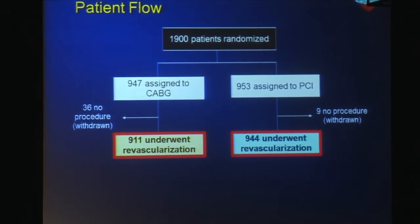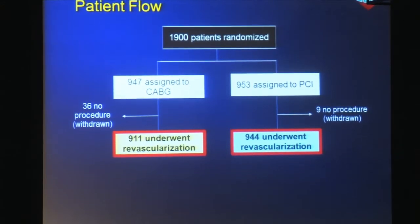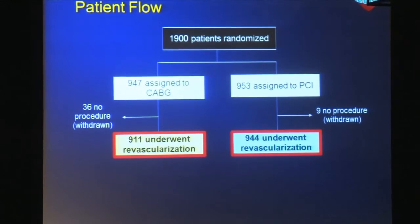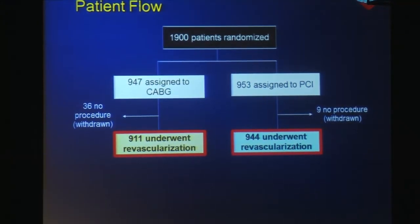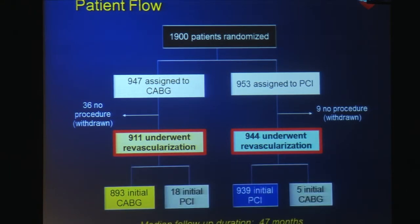As Dr. Fuster already presented, there were 1,900 patients randomized in the FREEDOM trial — 947 to CABG and 953 to PCI. There were 36 patients in the CABG arm and 9 patients in the PCI arm who underwent no index procedure and withdrew from the study early on within the first week. Therefore, there were 911 patients who underwent revascularization in the CABG arm and 944 patients in the PCI arm, forming the patients for our economic study. We treated these patients according to the intention-to-treat principle, even though there were 18 crossovers to PCI in the CABG group and 5 crossovers to CABG in the PCI group.